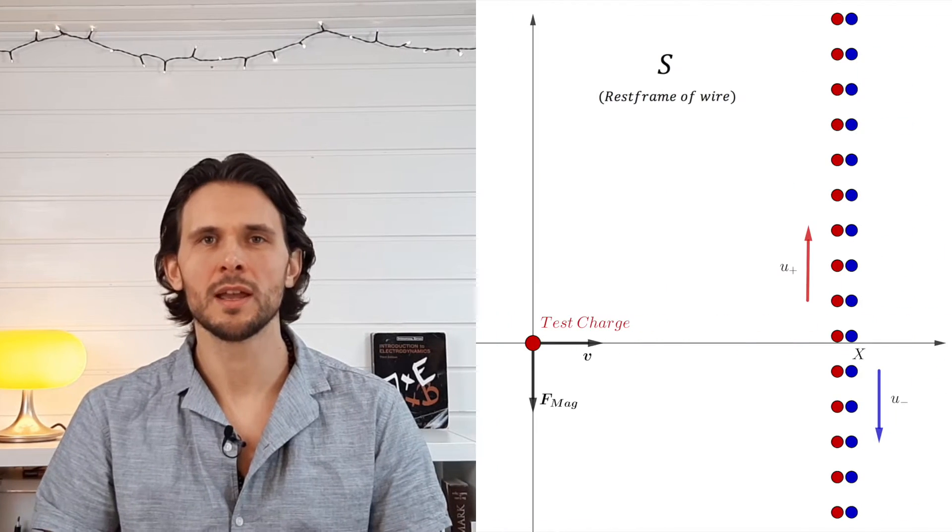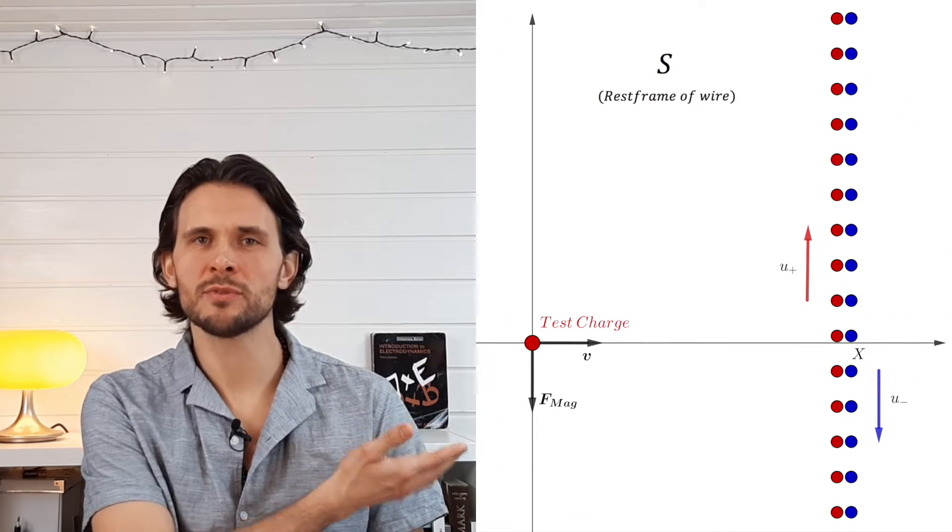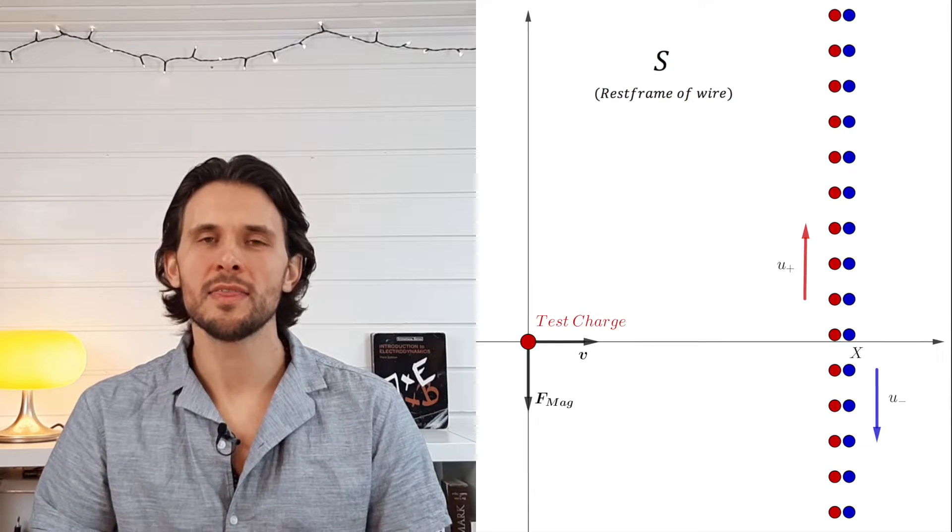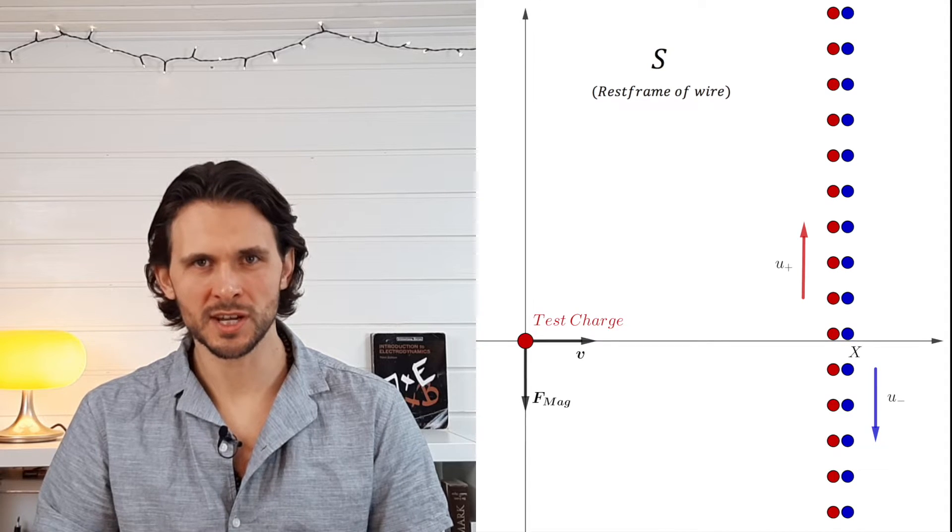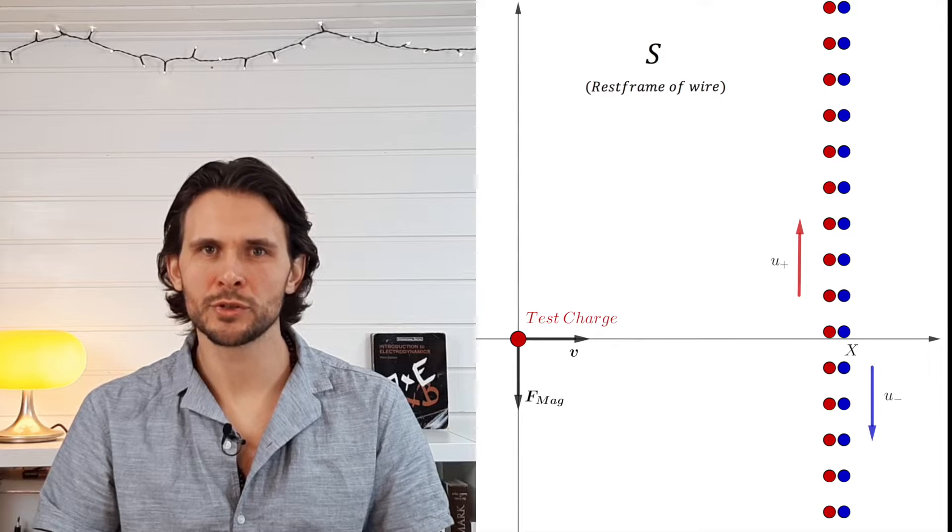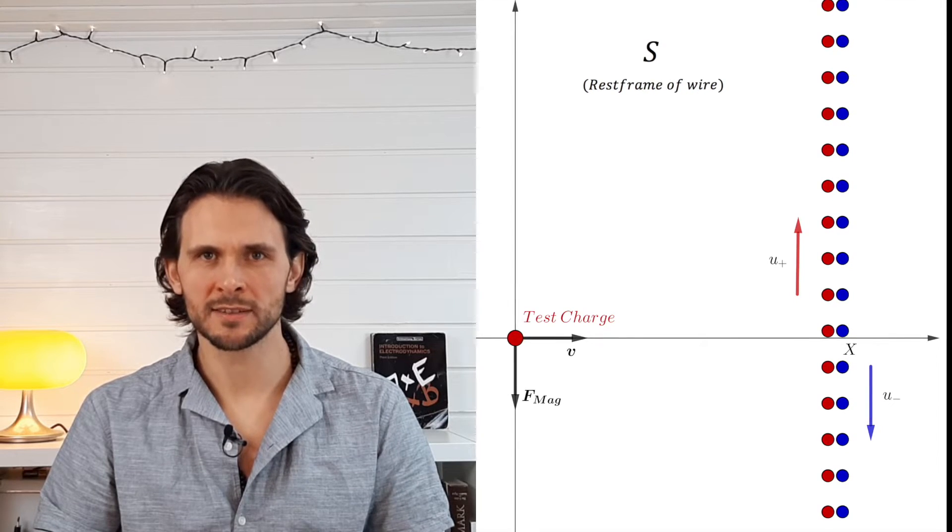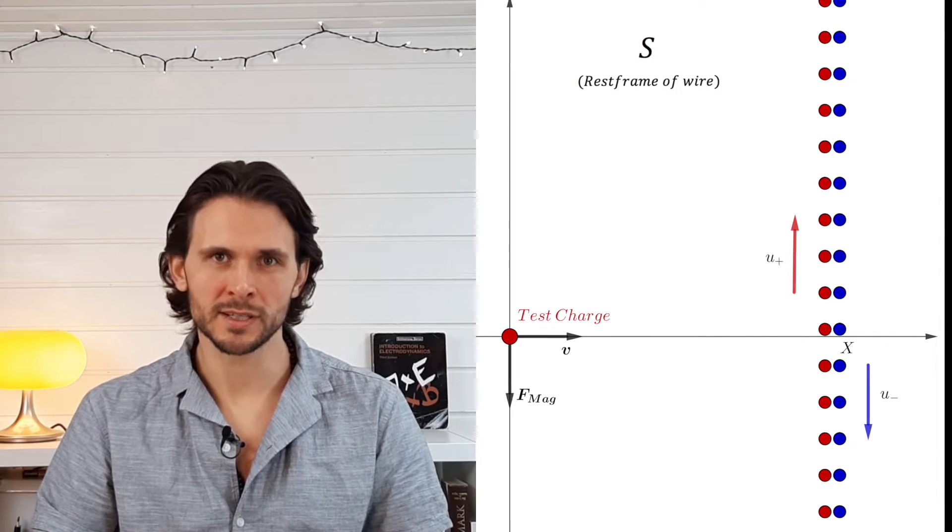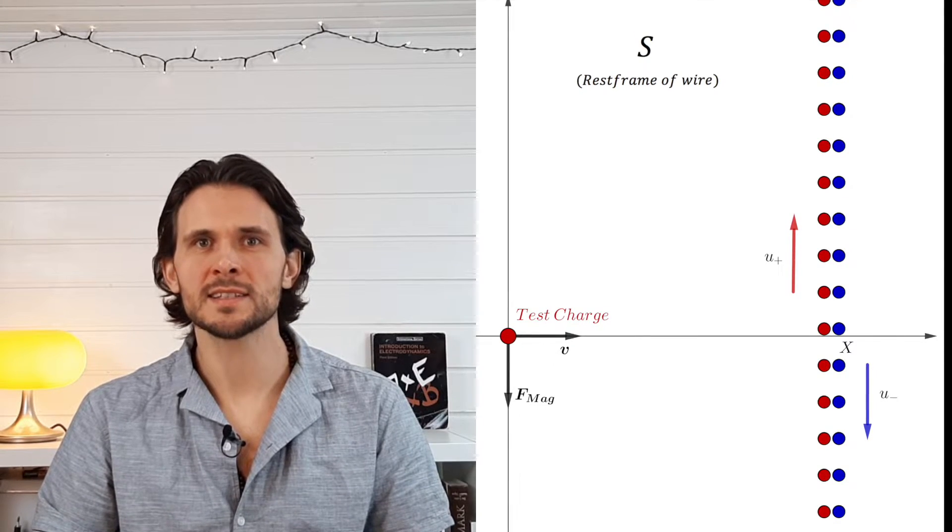Before we go to the solution, let's look at an example where the static analysis fails. Here we have the same wire as before, but this time rotated 90 degrees. This means the motion of the test charge will now be perpendicular to the wire. Again, the wire is electrically neutral and produces a magnetic field. The test charge will experience a force perpendicular to its motion, in this case negative y direction.